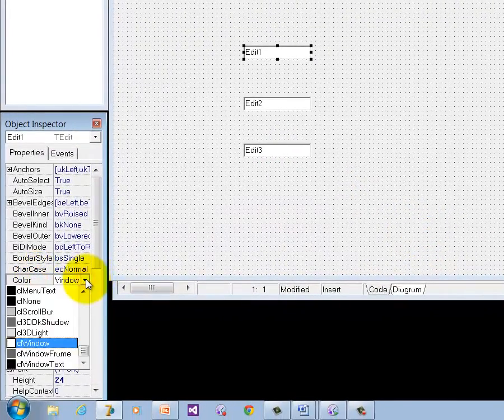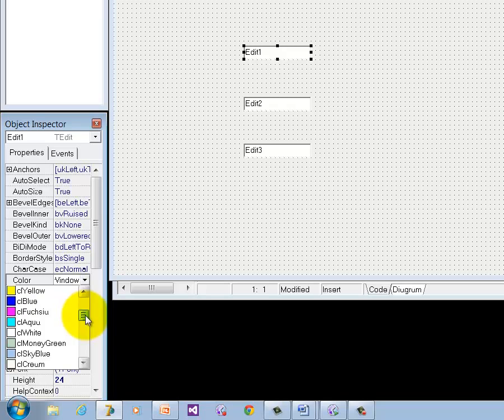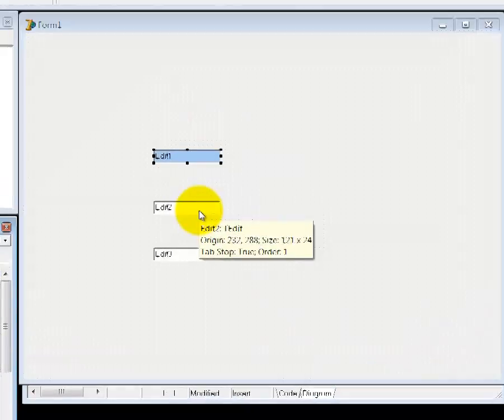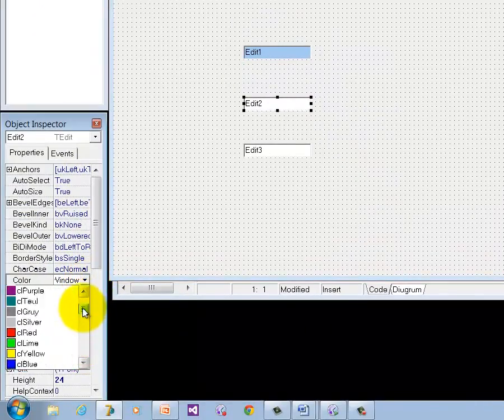I can now go and change edit1's color to blue. As you can see this will not affect the colors of the other two edits. I can also change edit2's color to red. And then edit3's color to yellow.